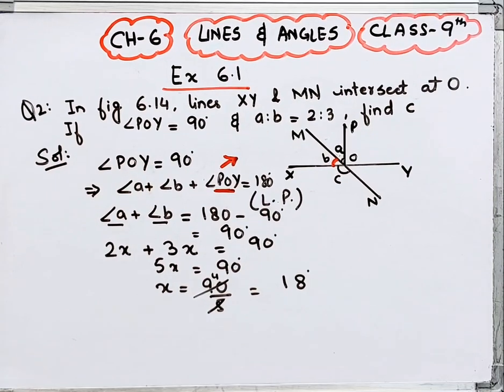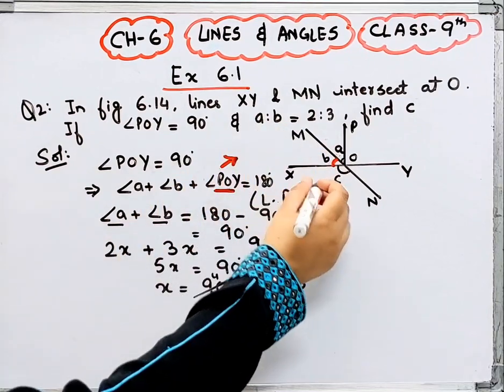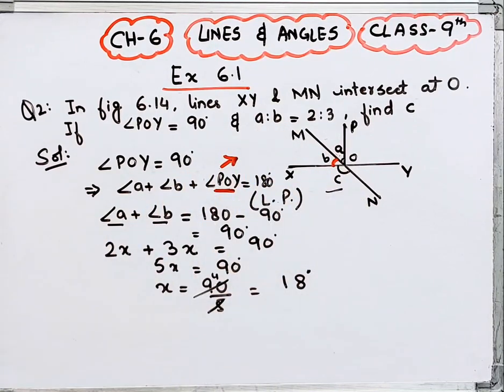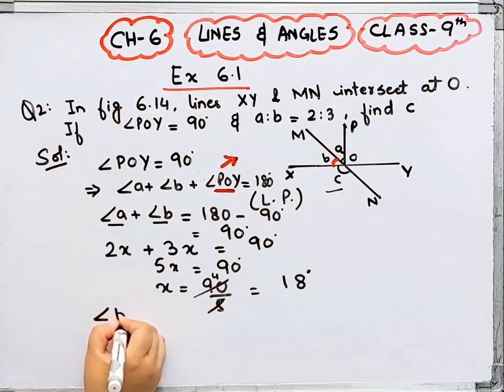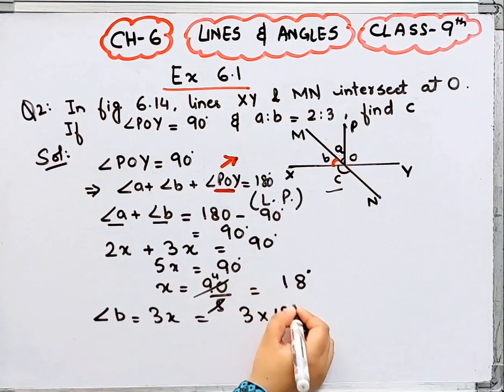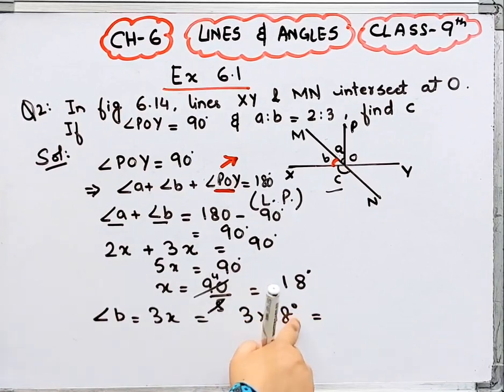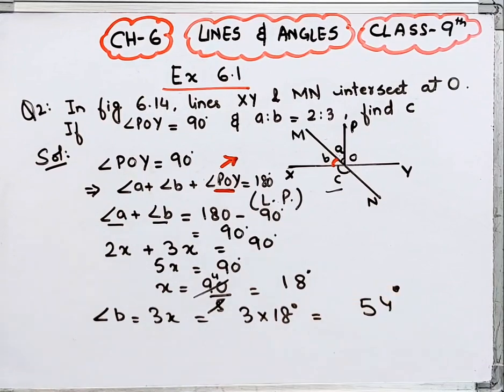Now you have to find out, X value is here. So you have 18 degrees. Now you have to find out angle B. Simple. Angle B, how much is it? 3X meaning 3 into 18 degrees. So this will be 3 is 24, 3, 3, 4 is 5, 54 degrees.